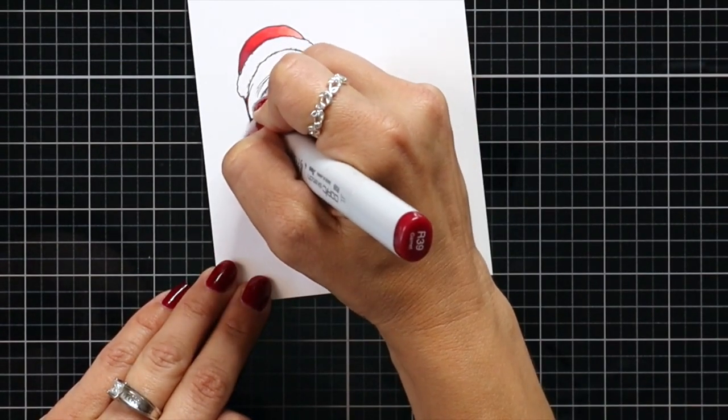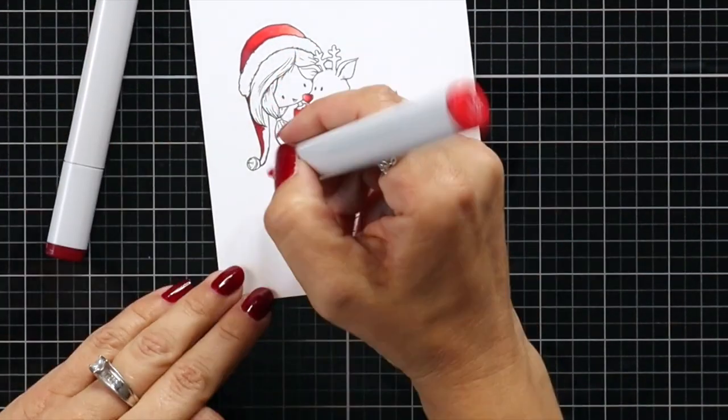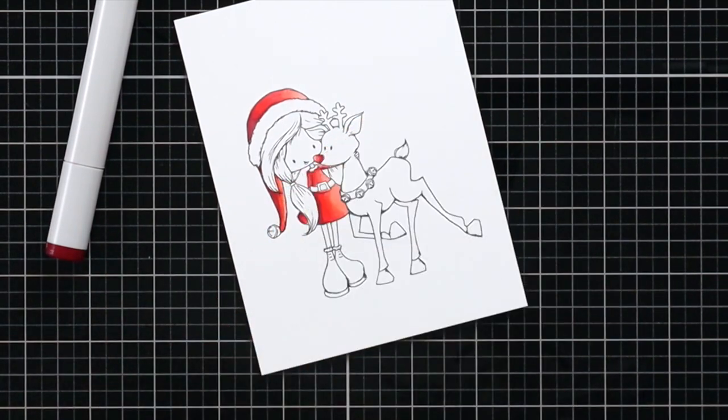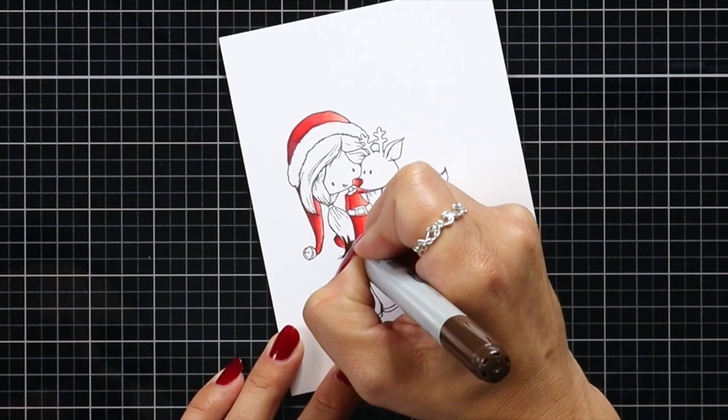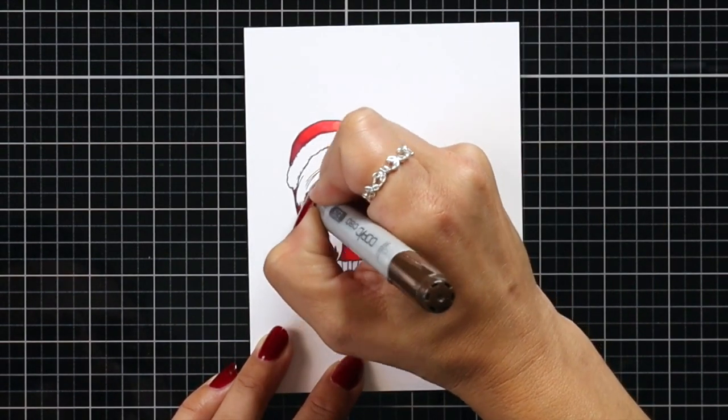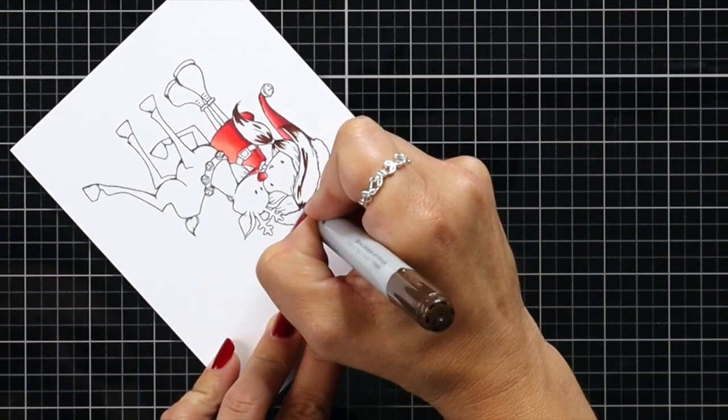As far as light source, I am going to color everything as if my light source is on the right-hand side. That just made it a lot easier for me to decide where my darkest areas are going to be, which is on the left-hand side of each image.